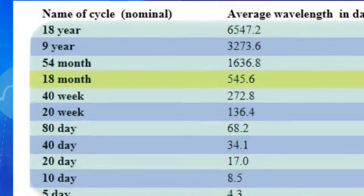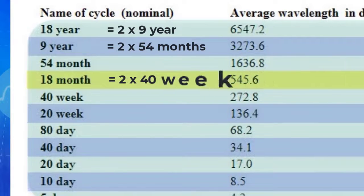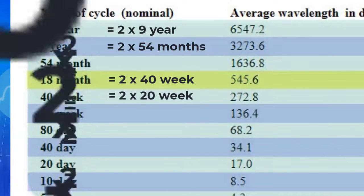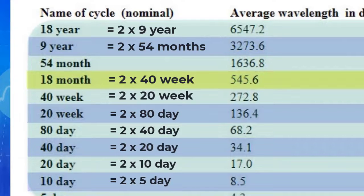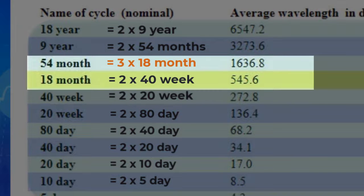Let's take a look at the part of the nominal model that was defined by Hurst. You will see that the ratio between the wavelengths of these cycles is in each case 2 to 1, except for one case in which the ratio is 3 to 1. And that is highlighted in yellow there. It is the ratio between the 18-month cycle and the 54-month cycle.